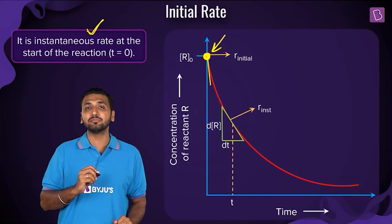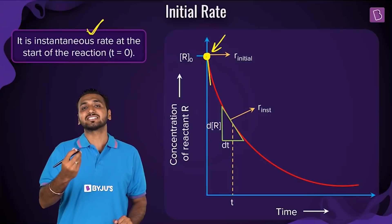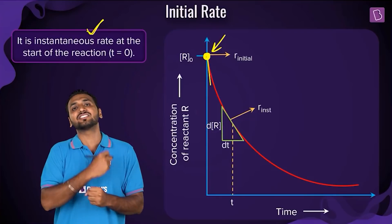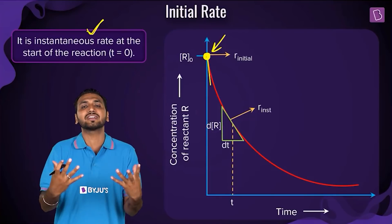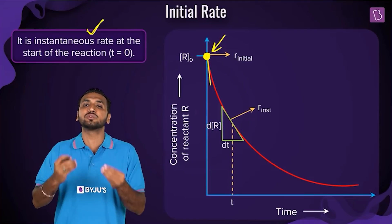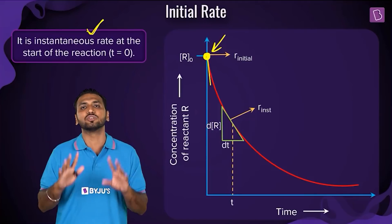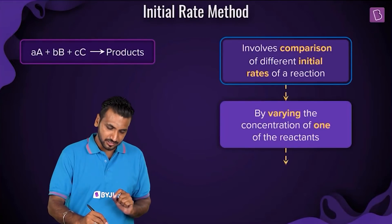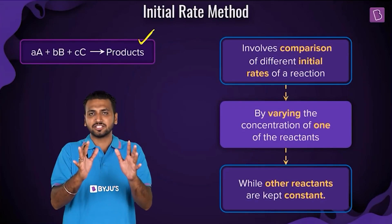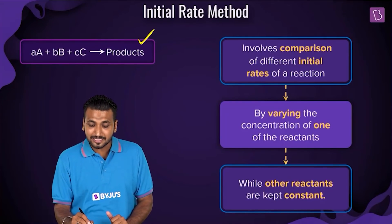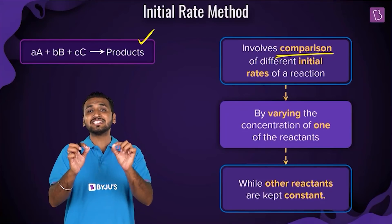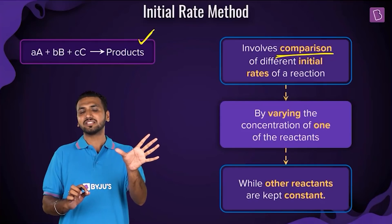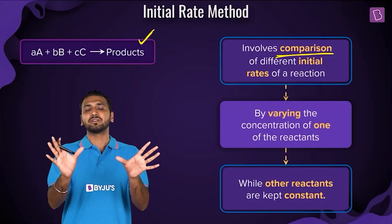Now, how is this going to help you determine the order of the reaction? That's the idea behind the initial rate method — we want to figure out the order with respect to individual reactants and the overall order. The keyword for the initial rate method is 'comparison' — if I had to replace 'initial rate method' with one word, I would say 'comparison'.